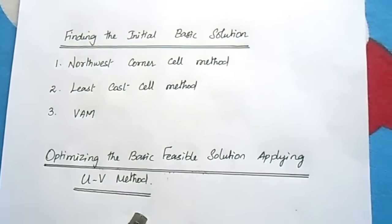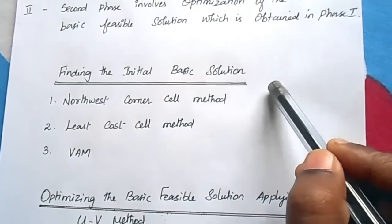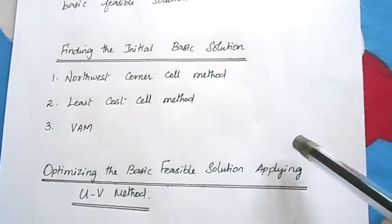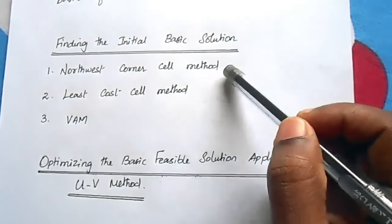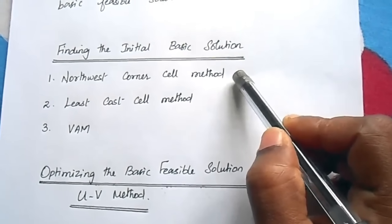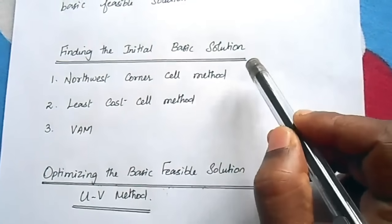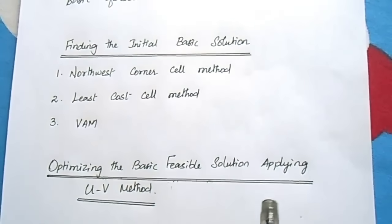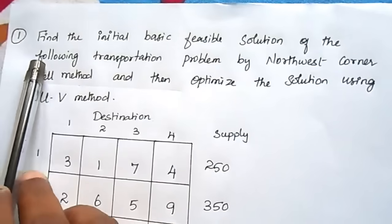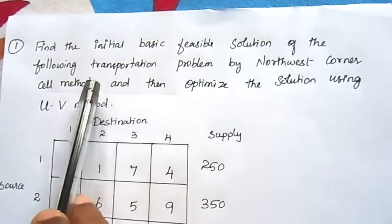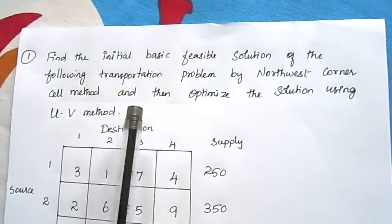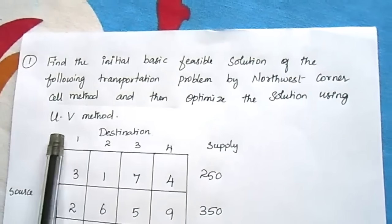I have already uploaded a separate video for the first phase — finding the initial basic feasible solution by applying three different methods. Here I am going to solve one problem using the Northwest corner cell method to find the initial basic feasible solution, and then optimize it using the UV method.